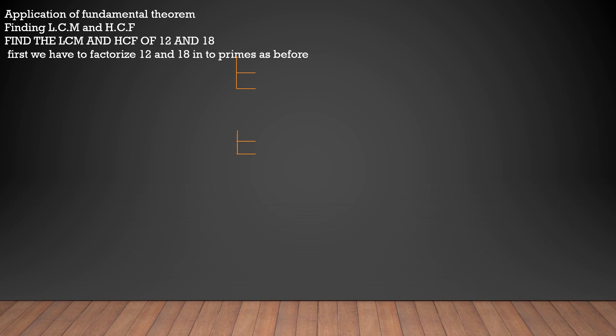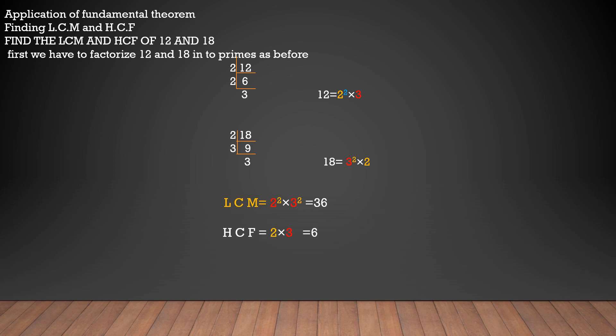First, I will write 12 as prime factors: 2 divides 12 to give 6, 2 gives 3, so 12 = 2² × 3. Then 18: 2 divides to give 9, and 3 divides 3 times, so 18 = 3² × 2. For LCM, you have to take all the factors in both numbers with their highest powers. The factors are 2 and 3. The highest power of 2 is 2, and the highest power of 3 is also 2. So LCM = 2² × 3² = 36.